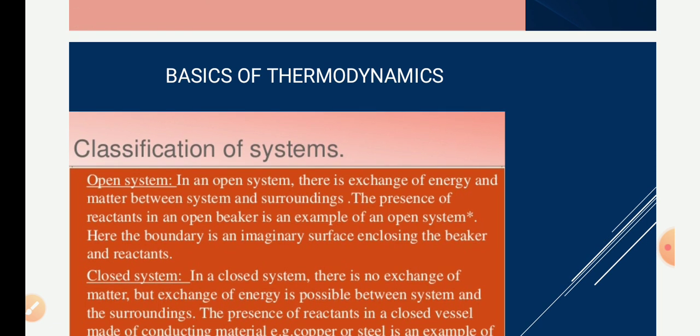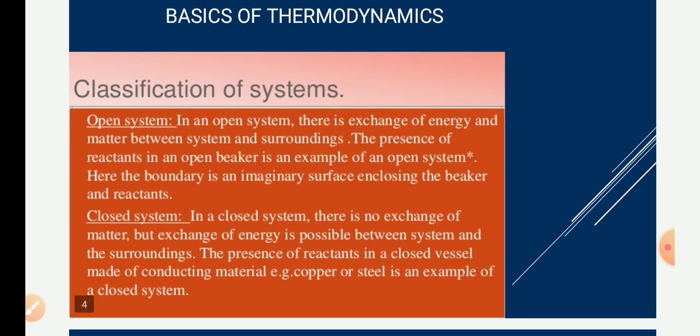Based upon the nature of the boundary, systems are classified into three types: open system, closed system, and isolated system. In an open system, there is a transfer of both energy and matter between the system and surroundings. The boundary in an open system is called a control surface. For example, an automobile engine, or hot gas entering and leaving gas turbines in industries — both energy and matter enter and leave. So we call that an open system.